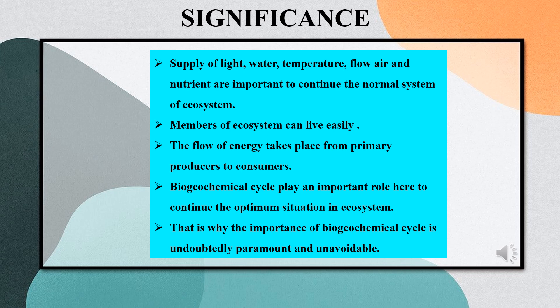Biogeochemical cycles — through the supply of light, water, temperature, airflow, and nutrients — are important to maintaining the normal functioning of ecosystems and play an important role in sustaining optimum conditions. Recycling requires dissipation of energy from sources such as organic matter, solar radiation, or fusion fuel. The concept of recycling has become a major goal for society, which is why the importance of biogeochemical cycles is undoubtedly paramount and unavoidable.